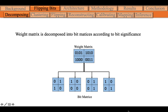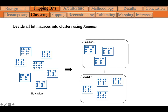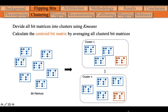A weight matrix is decomposed into bit matrices according to bit significance. For example, if each value is composed of 4 bits, the weight matrix will be decomposed into 4 bit matrices, each one containing all the bits with the same bit significance. The clustering step divides all the bit matrices into clusters using K-means. For each cluster, a centroid matrix will be calculated by averaging all the clustered bit matrices.